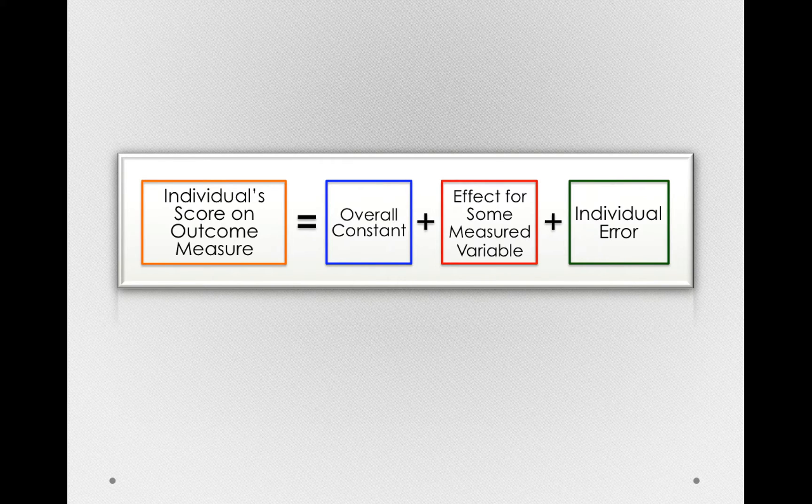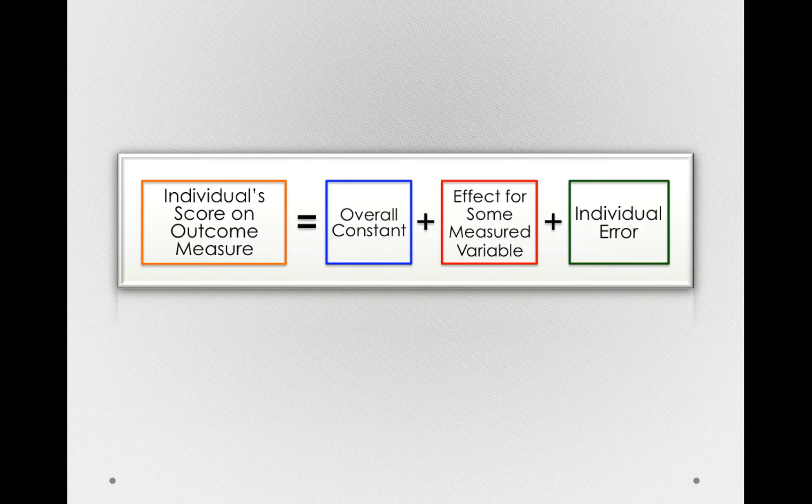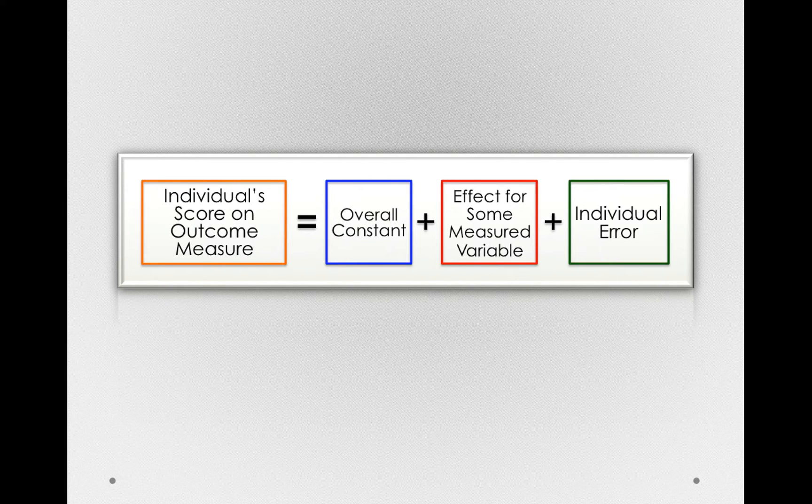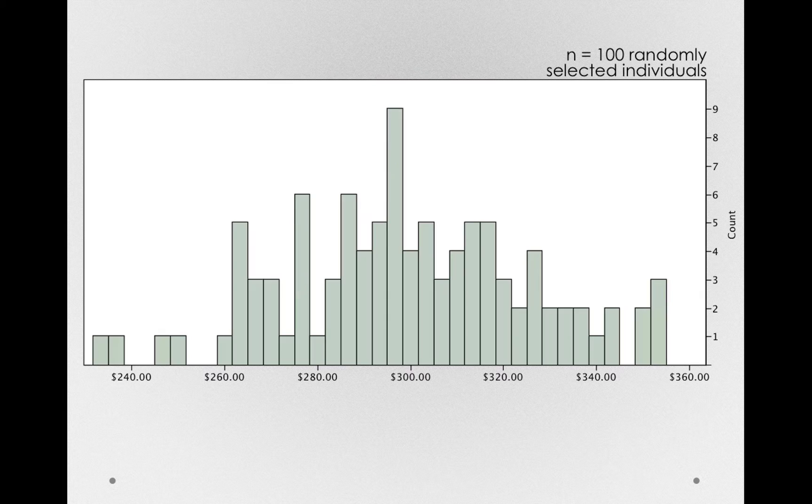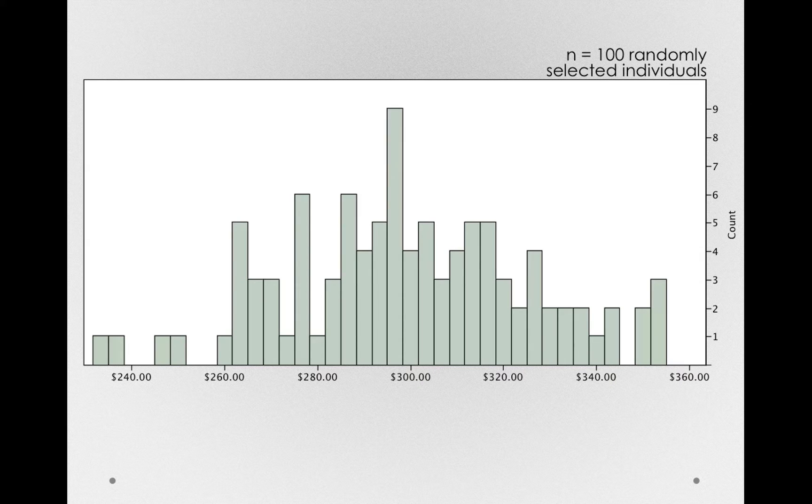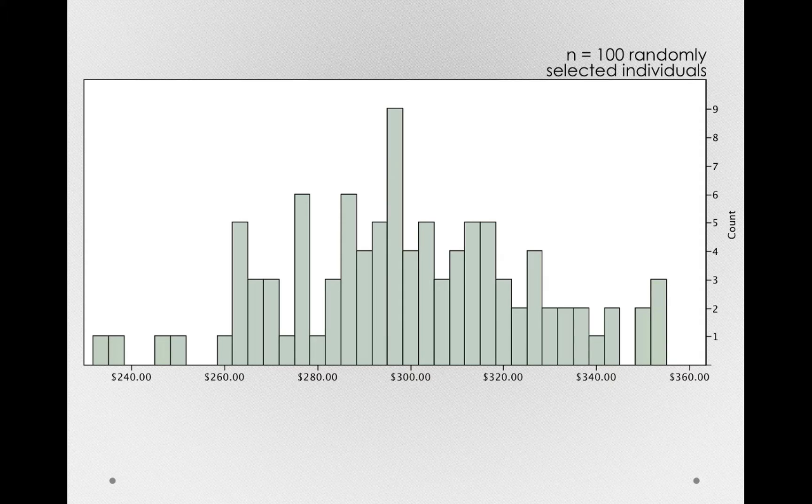Let's look at a situation in which we'll have this individual error, and hopefully that will make clear what we mean by all the things we didn't measure. Let's look at a particularly unpredictable situation, predicting flight costs. Imagine we collect 100 randomly selected individuals and ask them how much they paid for a recent flight. Here we have the histogram of these measurements, and we have something to explain.